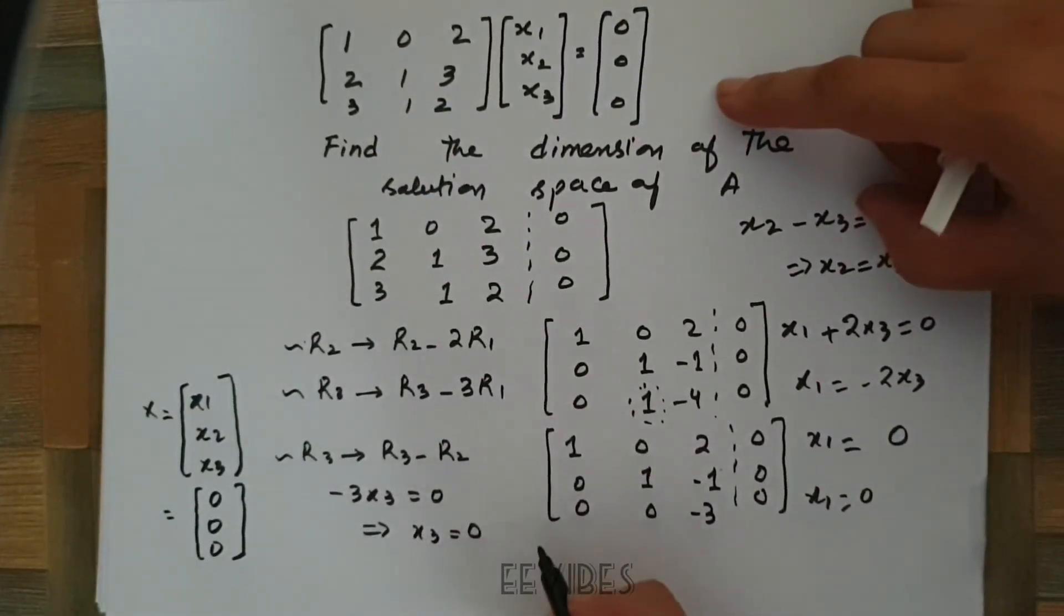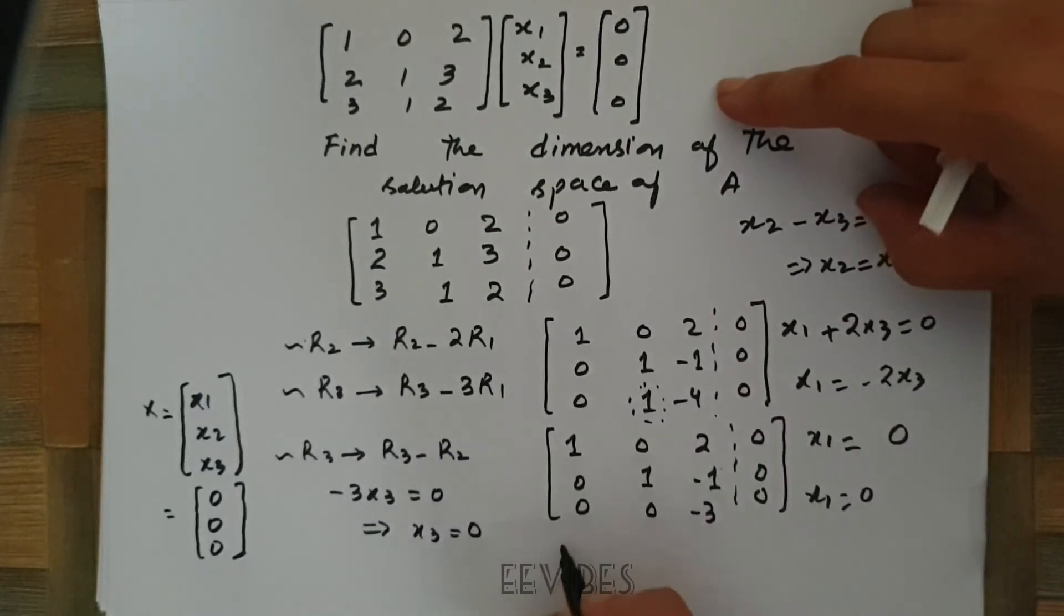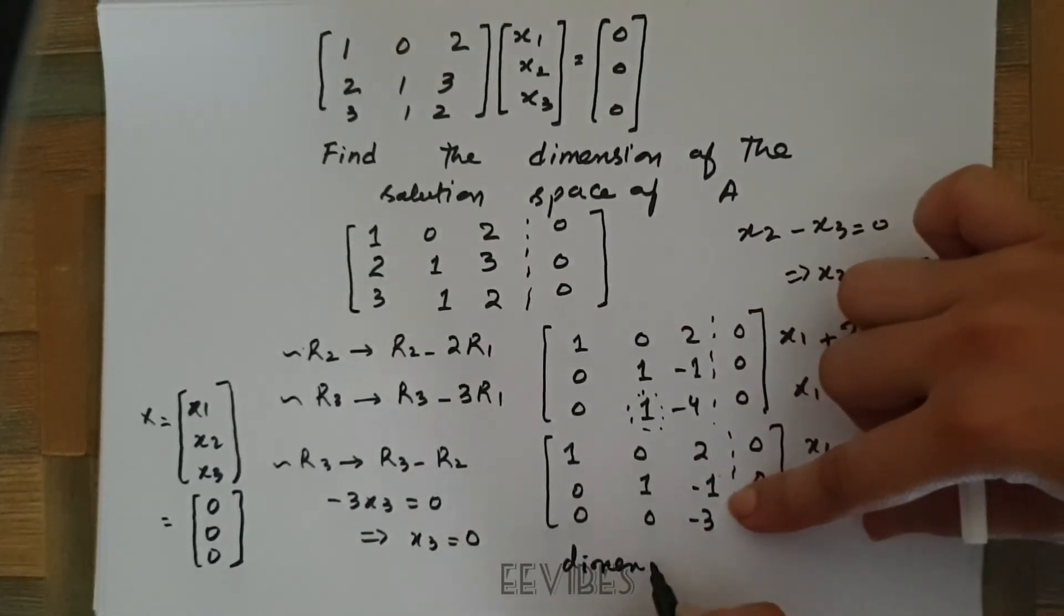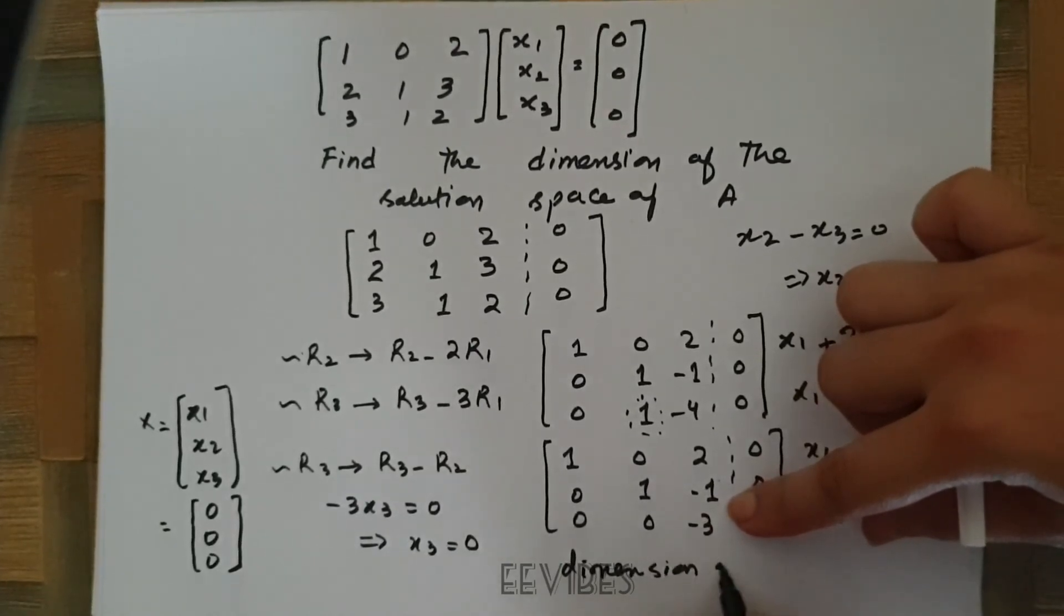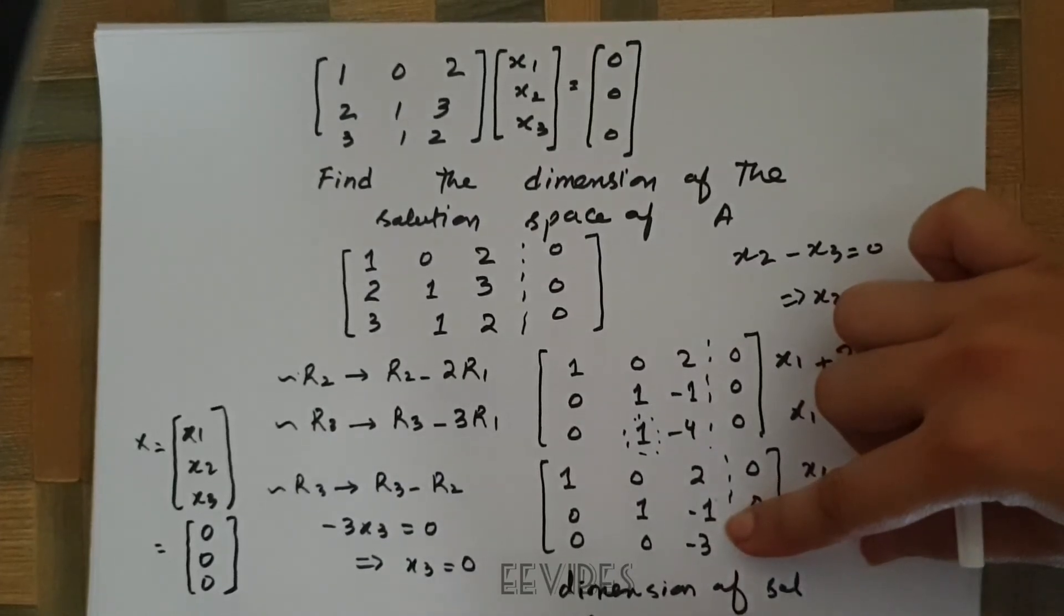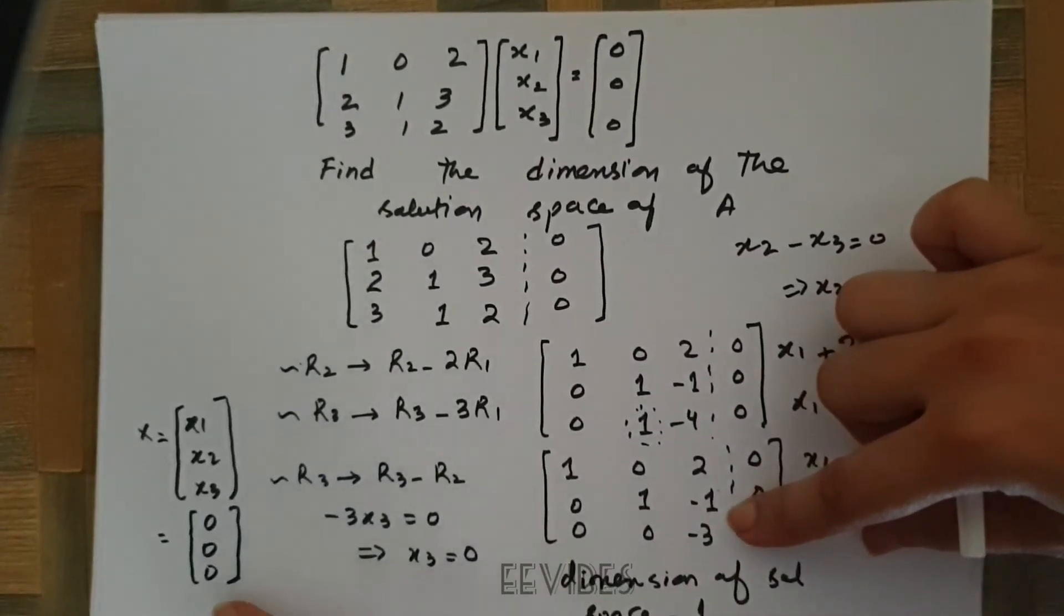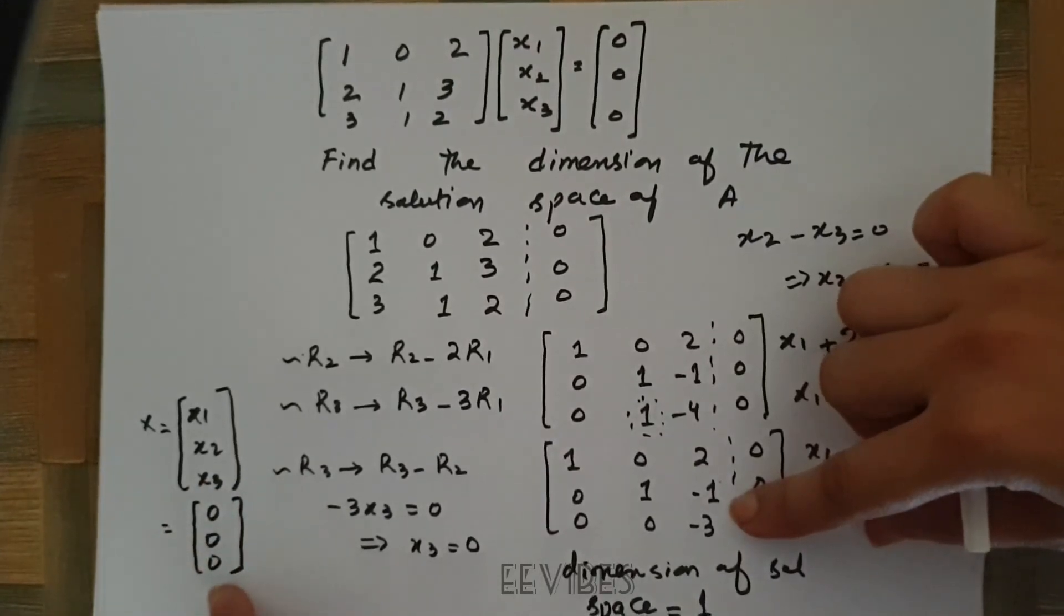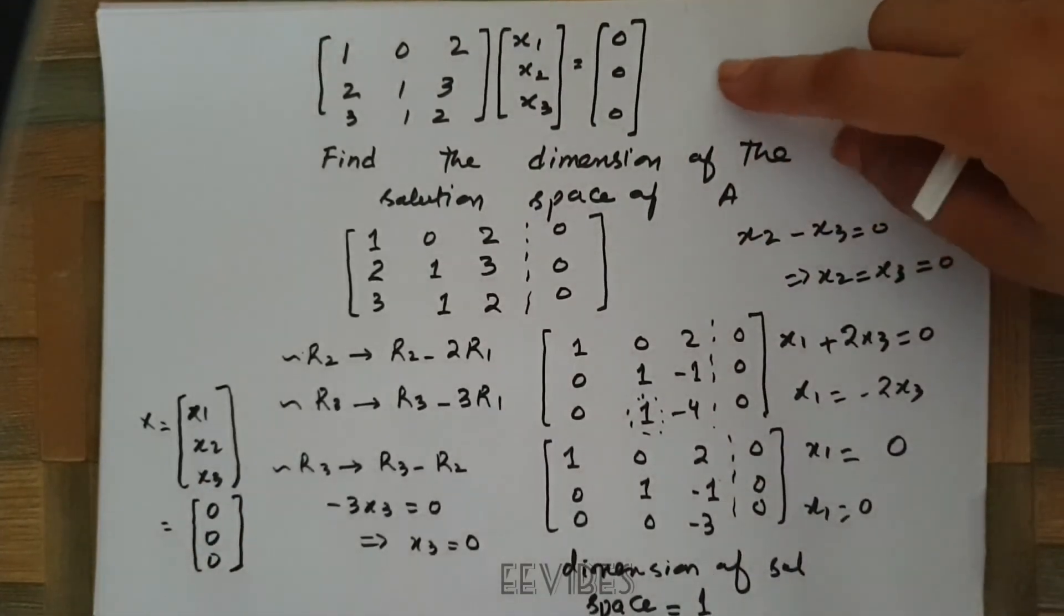That's why we will say that the dimension is equal to 1. Dimension of solution space is equal to 1. Why? Because only one vector is present in the solution space of this matrix. Thank you for watching.